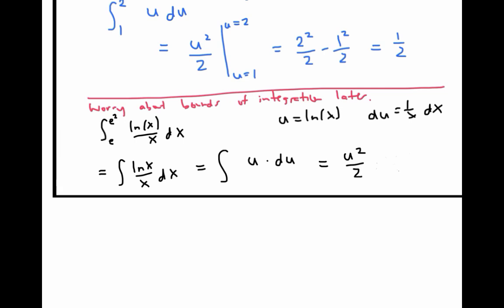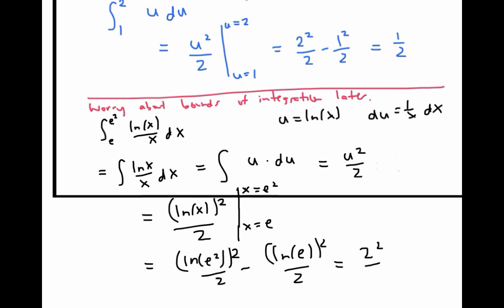Now, just like when we're doing indefinite integrals, I'm going to get back to the variable x, by substituting back in for u. u is ln(x). So I square that and divide by two. And then I can go back to my original bounds of integration. Those bounds are the x values of e² and e. Plugging in those bounds, I get ln(e²)² / 2 - ln(e)² / 2, which evaluates to 2²/2 - 1/2, which is again, one half.